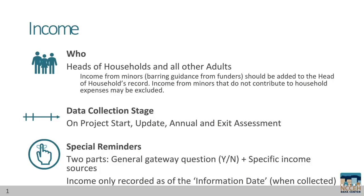Income is recorded as of the collection date. Each amount and date create a timeline for the client's income recorded in HMIS. For example, if you learn at project start that a client receives $300 earned income a month, the start date for their initial income is your project start date. Several weeks in, if you learn the client now earns $450, you would record yes, the client receives earned income for the amount of $450, and that amount starts on the day of your update.